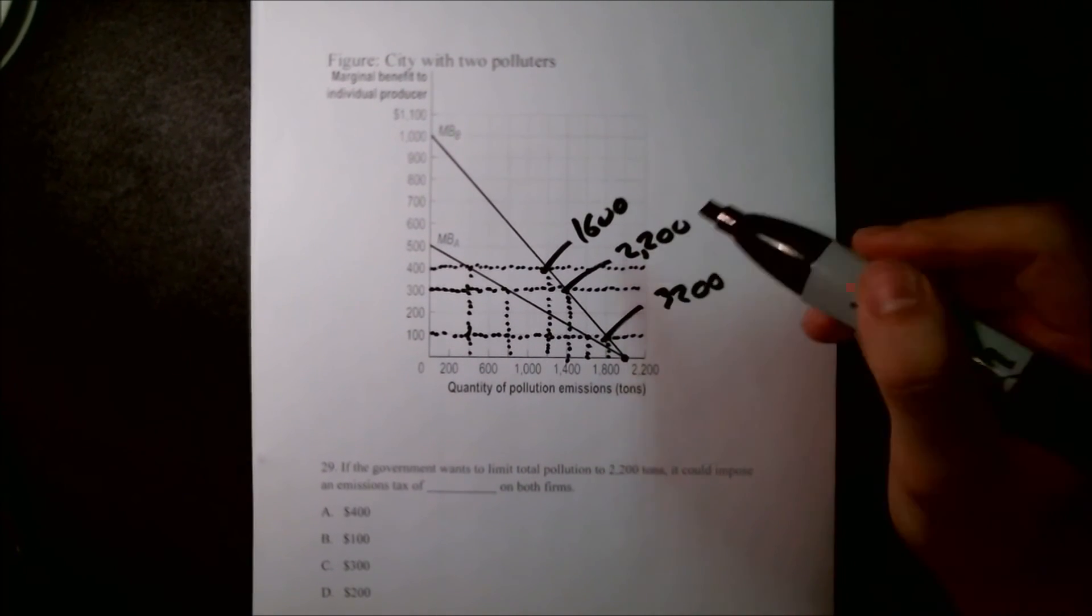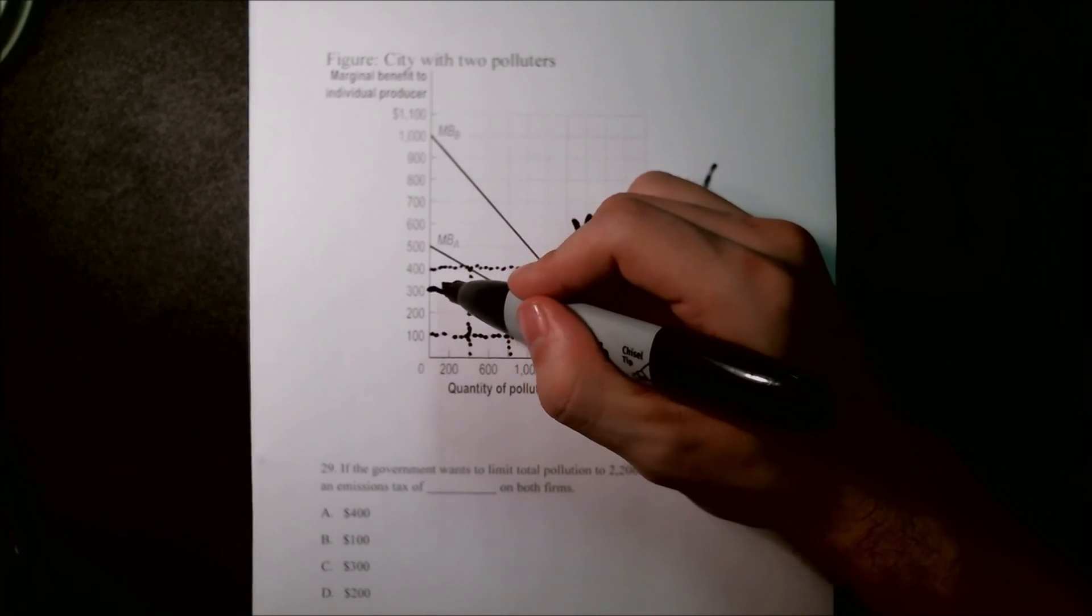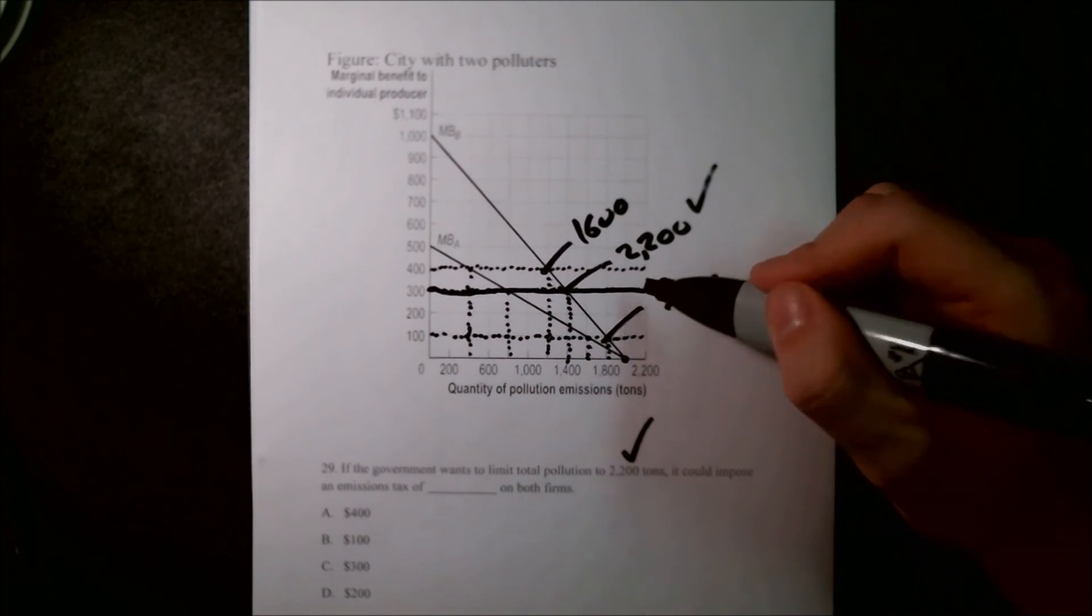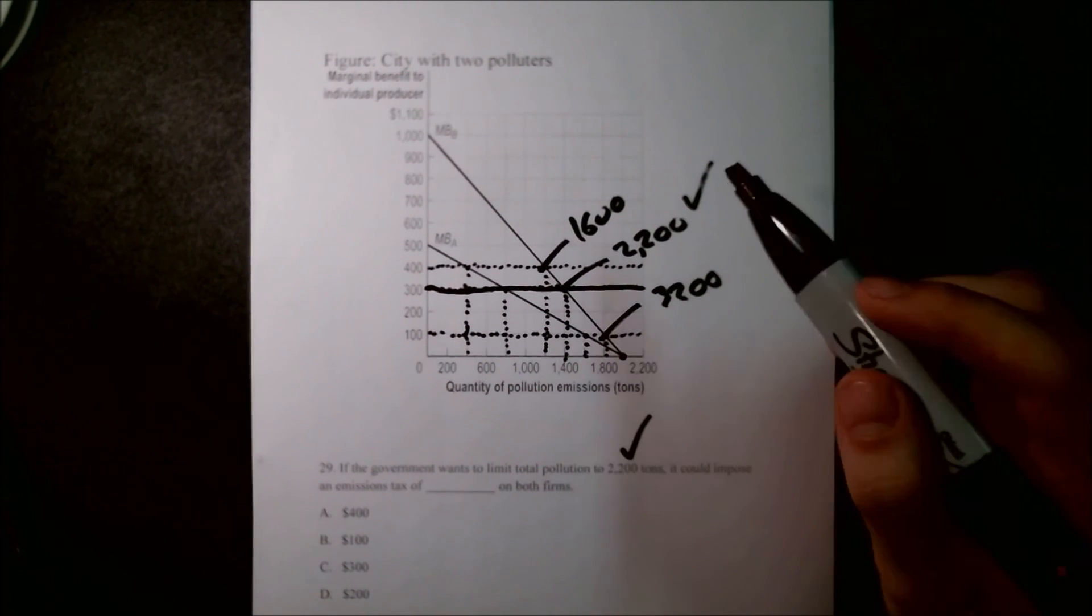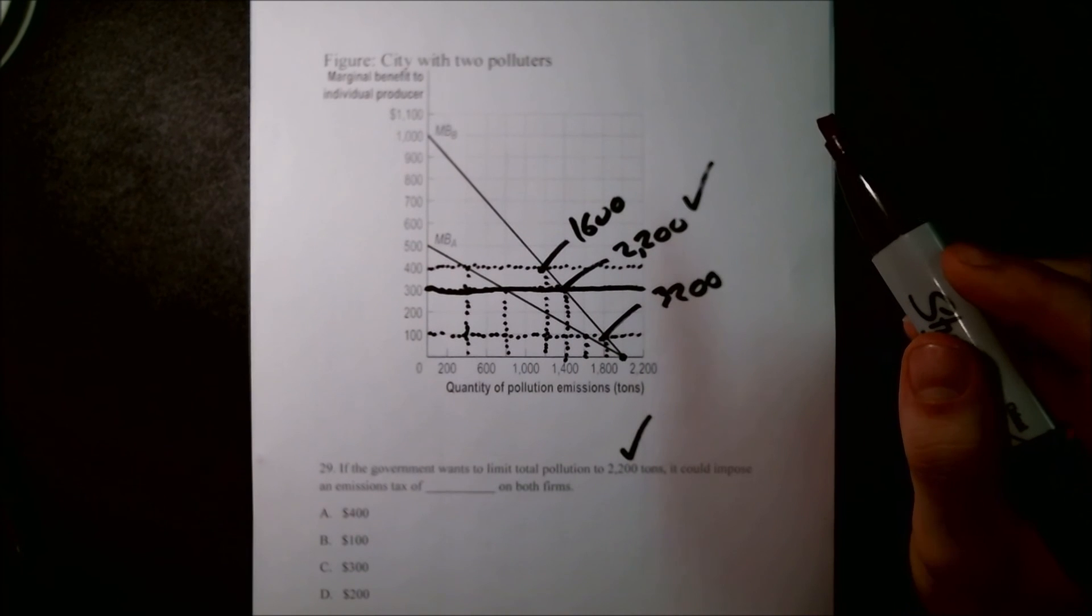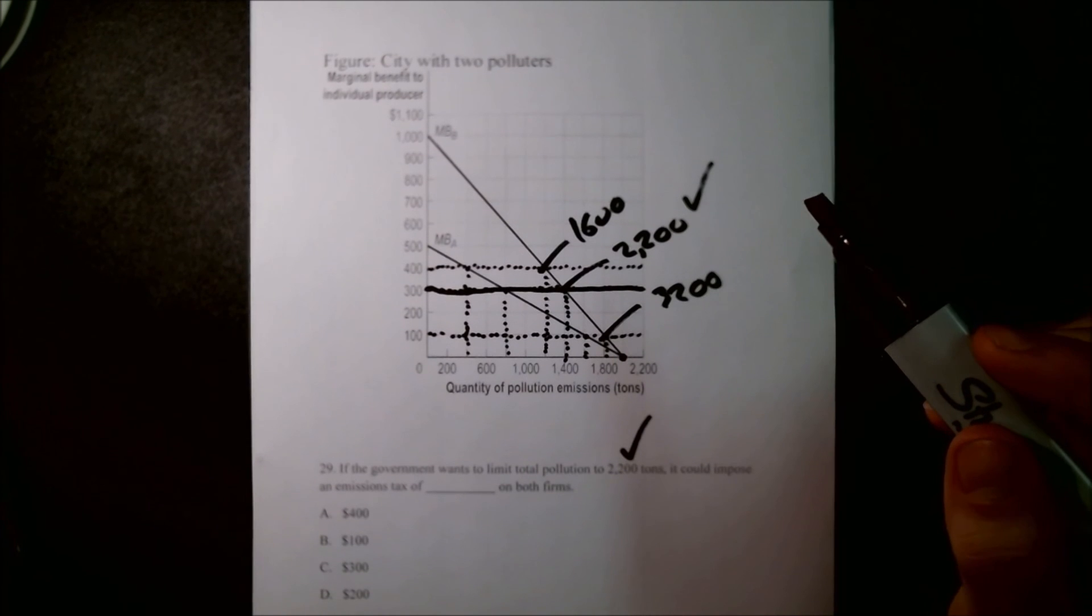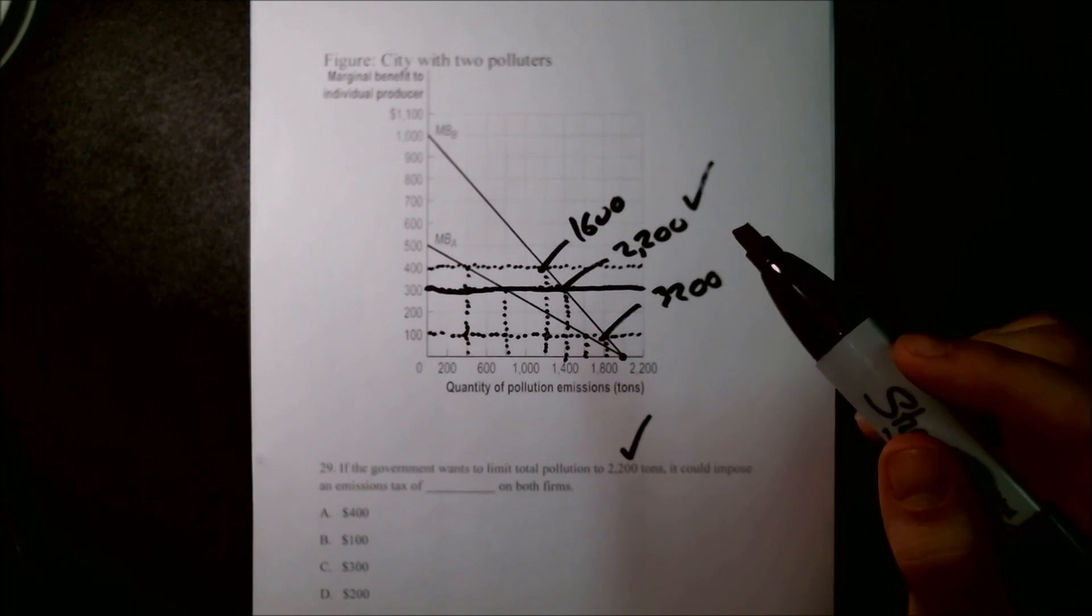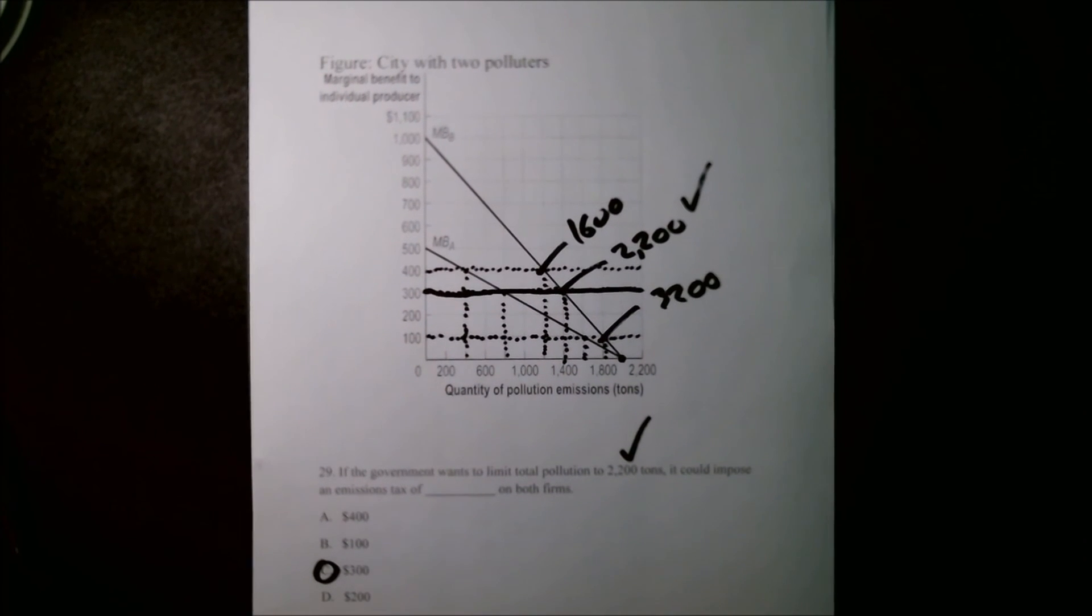So we now know that the tax that this government is going to want to impose, an emissions tax of $300. And that will change the market's total amount of pollution emissions to 2,200 tons, which is what we would assume must be socially optimal if that's what the government is trying to acquire. So we're going to go ahead and find $300 and circle that because that's the right answer.